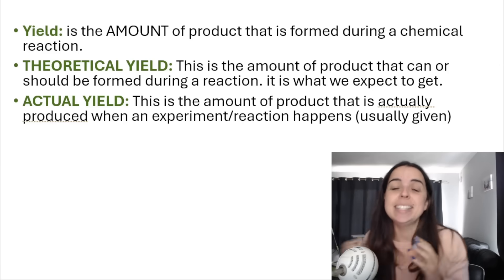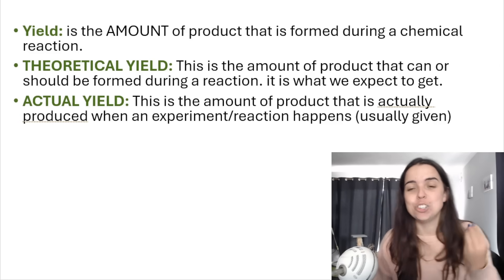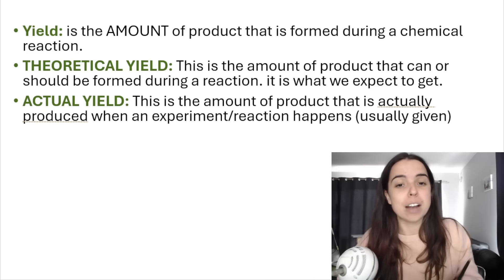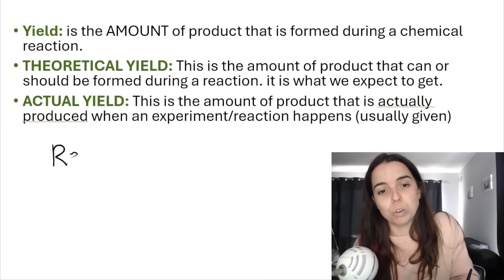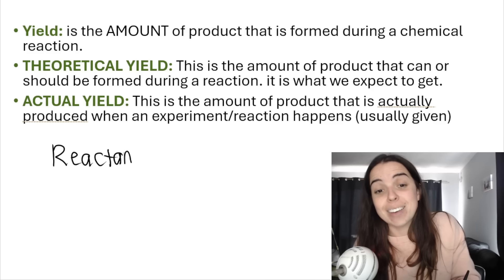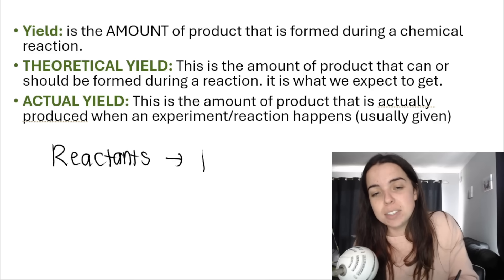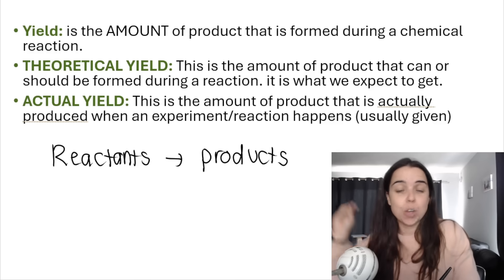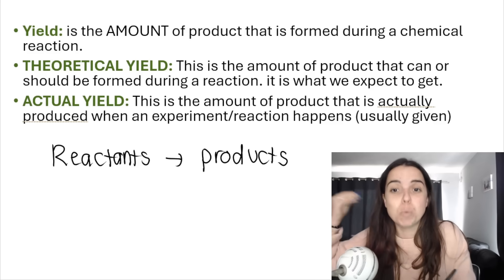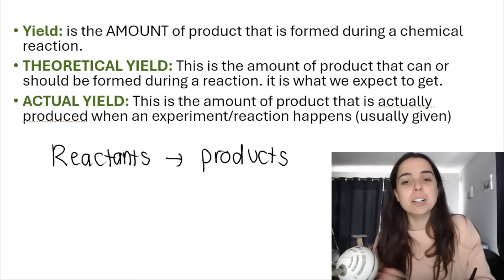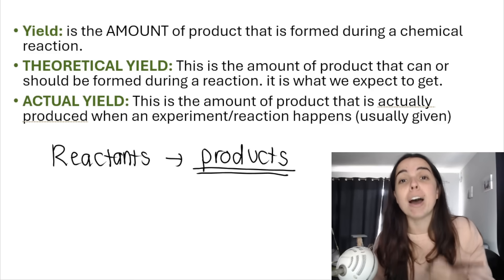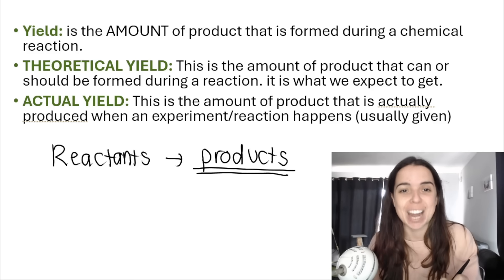First of all, yield is the amount of product that is formed during a chemical reaction. As you should know already, when we have a chemical reaction, we have stuff called reactants, then we have an arrow, and then we have stuff called products. Reactants are the stuff that we start with; products are the things that we end with — it's the stuff that we're making. So yield tells me how much of the products am I forming during a chemical reaction.